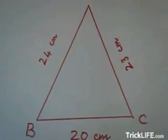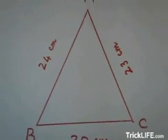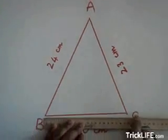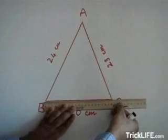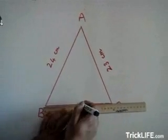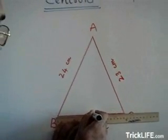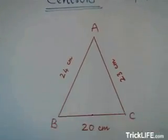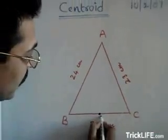Now I will draw the median by locating first the midpoint. It is of 20 cm in length. So exactly at 10 cm, I will mark a point. I will call this point as D.